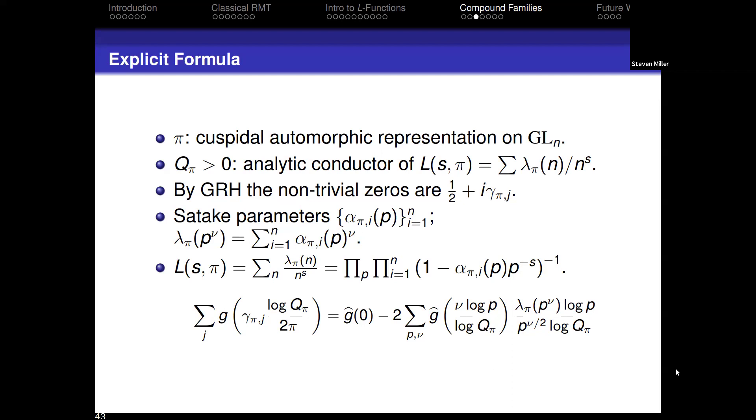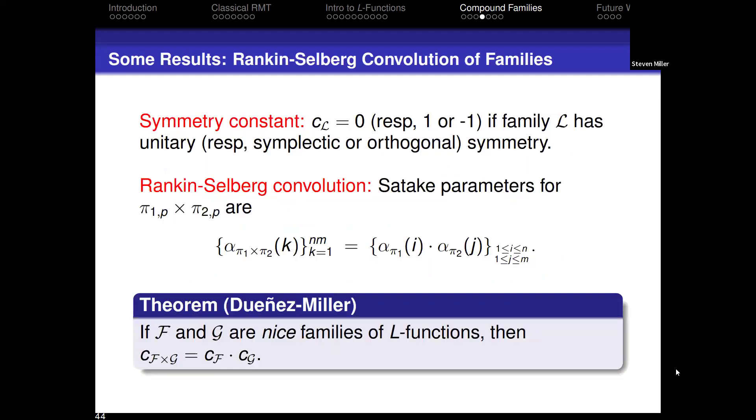We noticed we can associate a symmetry constant. It's zero if the family has unitary symmetry, one if it's symplectic, negative one if it's orthogonal. The main result we have is because the Satake parameters of the convoluted L-function—if I take two L-functions, I can form a new L-function by just taking the product of all the Satake parameters. It leads to the symmetry of the product is the product of the symmetries. This is a really nice way of seeing very simple behavior.